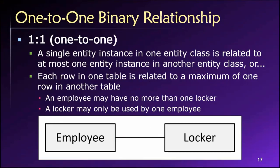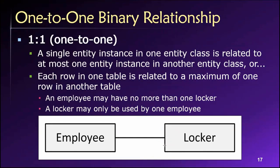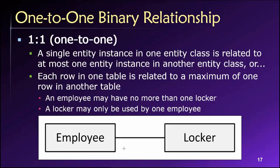We're looking at a relationship between an employee and a locker. If we read the relationship in this direction, we would say each employee is assigned to one locker, because the end of this line indicates the concept of one. Reading it from locker to employee, we say each locker belongs to one and only one employee. So a locker cannot be assigned to more than one employee, and an employee cannot have more than one locker at a time.